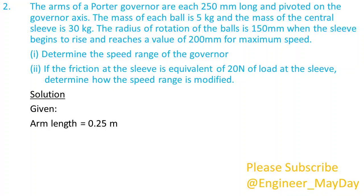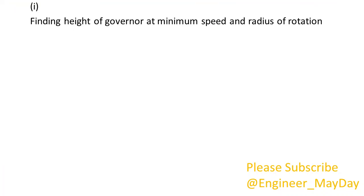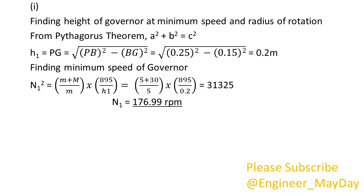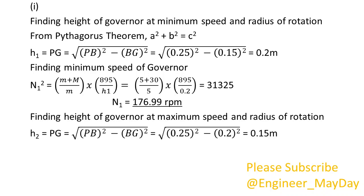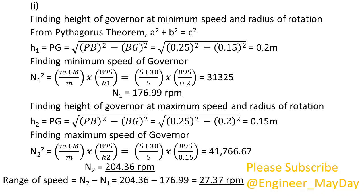Solution. Given: arm length equals 0.25 meters, mass of sleeve equals 30 kilograms, mass of ball equals 5 kilograms. Radius of rotation at minimum speed equals 0.15 meters, radius of rotation at maximum speed equals 0.2 meters. Finding height of governor at minimum speed: H1 equals 0.2 meters. Finding minimum speed of governor: N1 equals 176.99 RPM. Finding height of governor at maximum speed: H2 equals 0.15 meters. Finding maximum speed of governor: N2 equals 204.36 RPM. Range of speed equals 27.37 RPM.